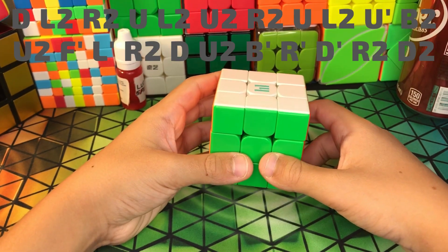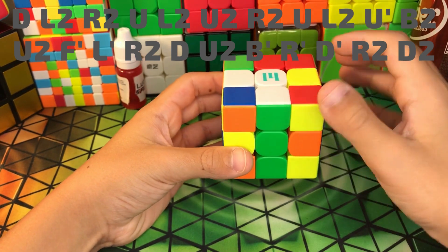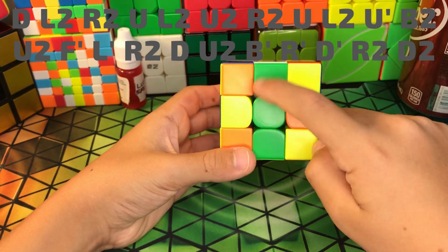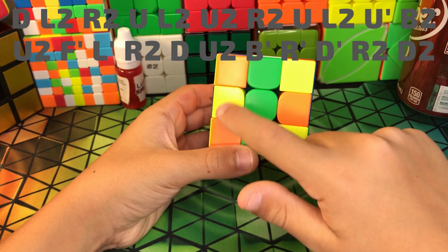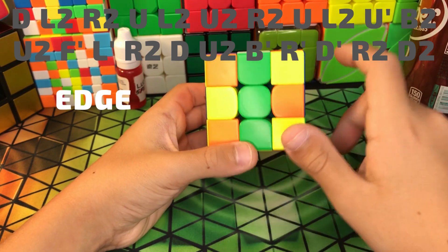I'll put the scramble on the screen in case you want to follow along. You know you have the right scramble when you have this L here on the white side, a green bar on the green side, two orange corners, two yellow corners right here, and a yellow and orange corner right there.